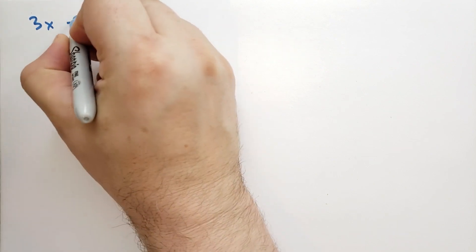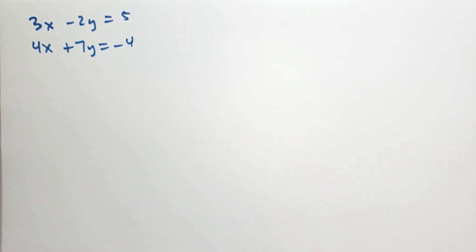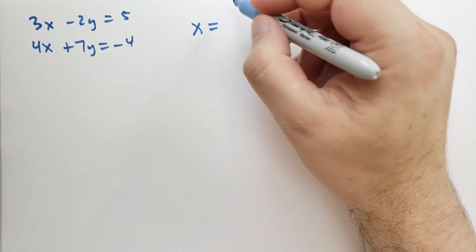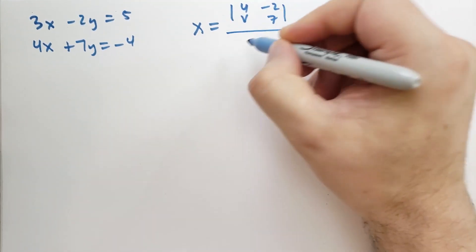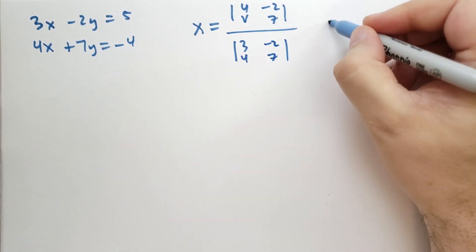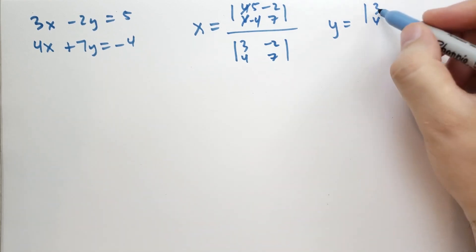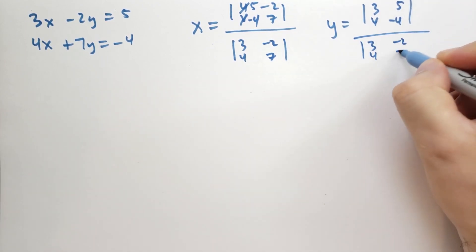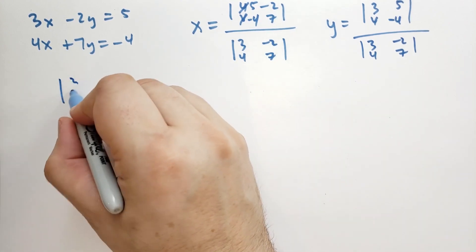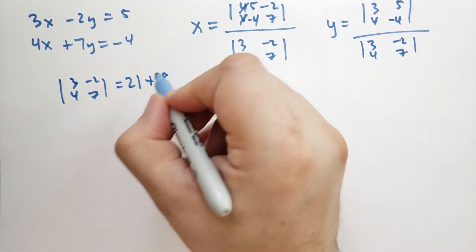Let's do an example. We have the system: 3X minus 2Y equals 5, and 4X plus 7Y equals -4. So X equals the determinant of [U, V; B, D] = [5, -4; -2, 7] over the determinant of [3, 4; -2, 7]. The determinant of [3, 4; -2, 7] equals 21 minus (-8) = 21 plus 8 = 29. The determinant of [5, -4; -2, 7] equals 35 minus 8 = 27.